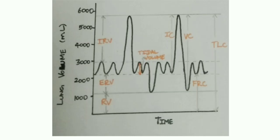This picture is a summary of what we covered. You can see tidal volume marked in the center at 500 ml, along with inspiratory reserve volume, expiratory reserve volume, residual volume, inspiratory capacity, vital capacity, functional residual capacity, and total lung capacity. Recollect the normal values of each and compare with this diagram.